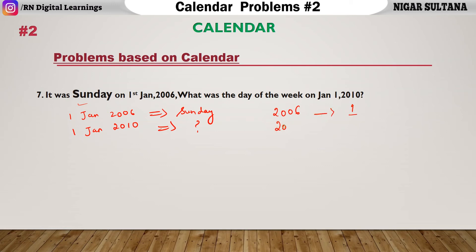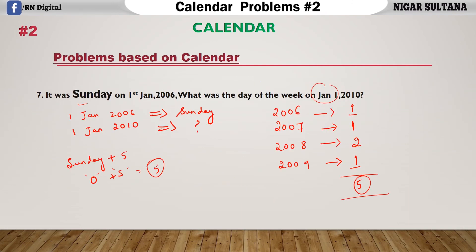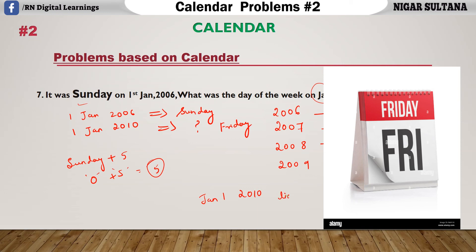In 2007, it is not a leap year, then it will also have one odd day. 2008, it is a leap year. So, we will have two odd days. In 2009, there will be one odd day because it is a normal year. 2010, we are talking about the first month, so no need to include this 2010. When we add this 1, 2, 3, 4, 5. When we add this 5 days along with this Sunday, Sunday means it is 0 plus 5. What is this 0 plus 5? 5. What does this 5 indicate? 5 is nothing but it is Friday. Jan 1st 2010 lies on Friday.